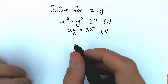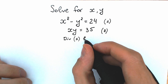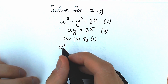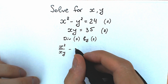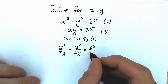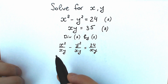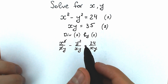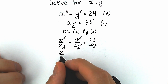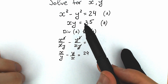Our first step is to divide the first equation by the second one. So we divide the first equation by the second one. As a result, we have x squared divided by xy, minus y squared divided by xy, equal to 24 divided by xy. We can cancel to get x over y minus y over x, equal to 24, but xy equals 35.